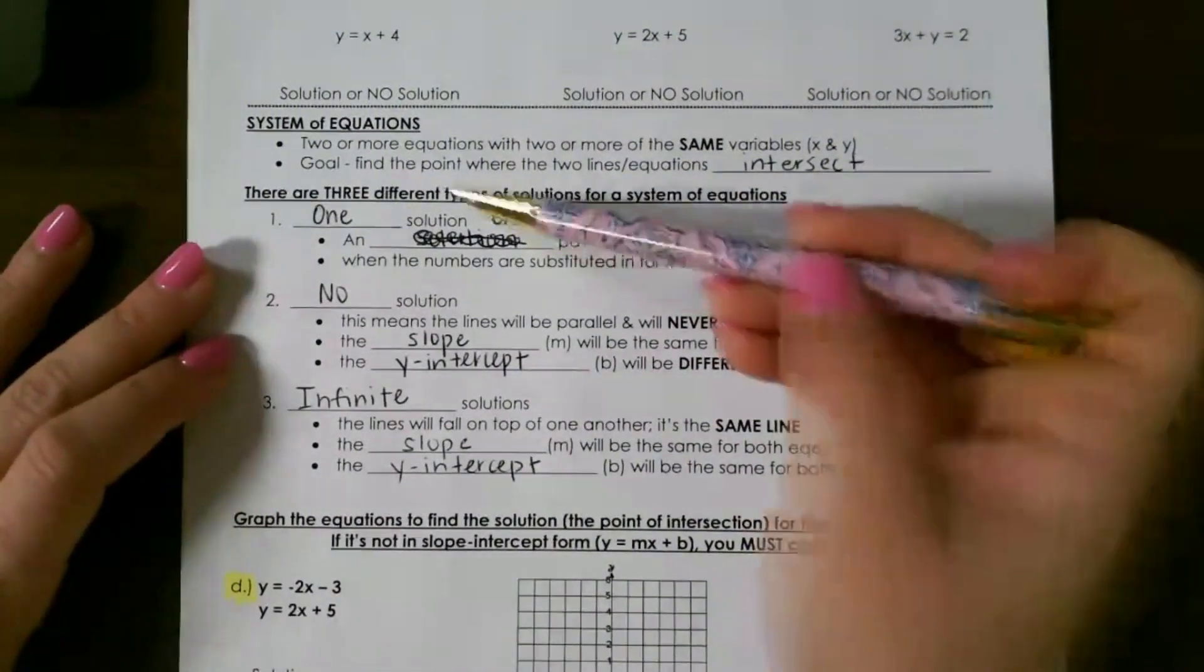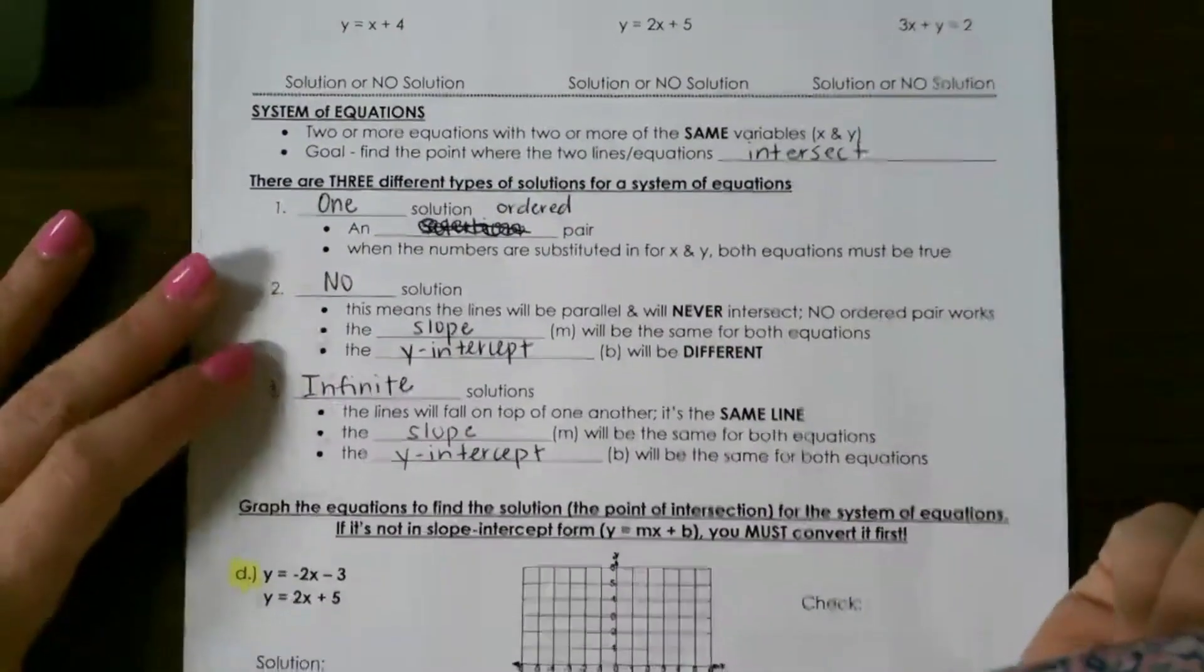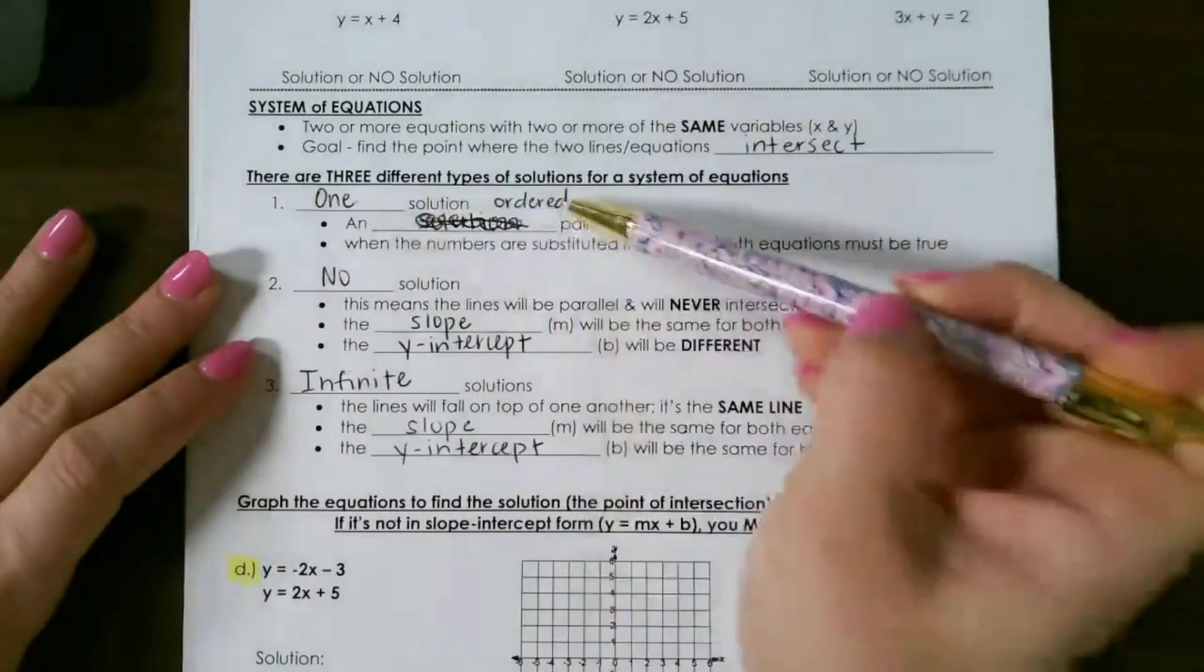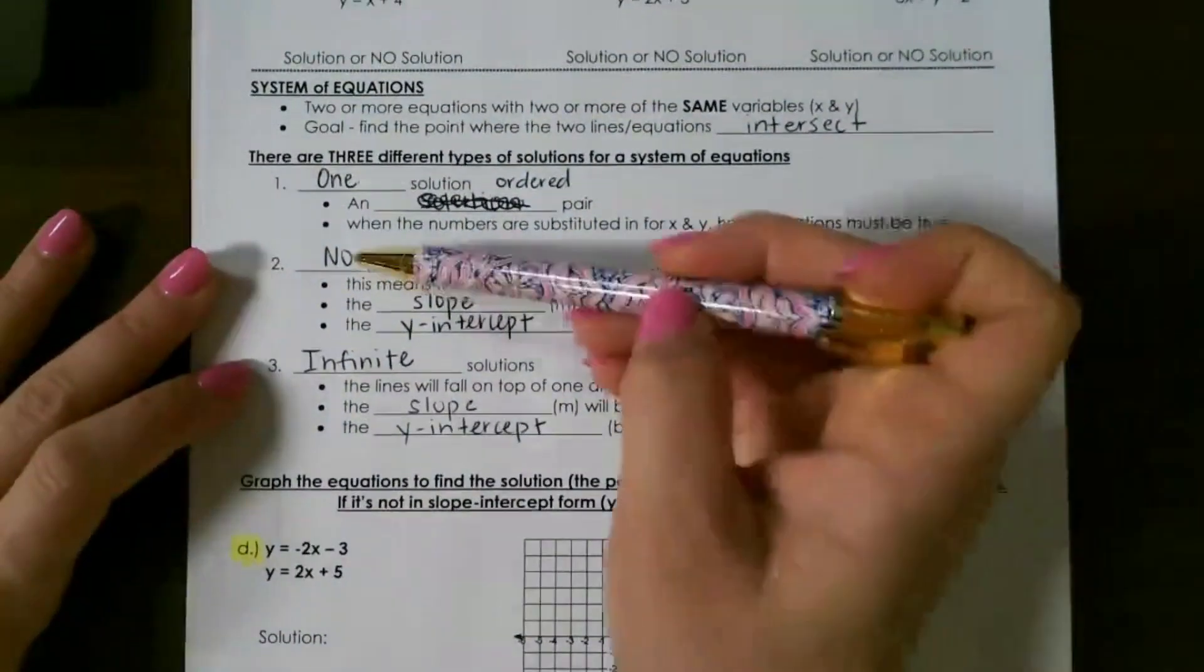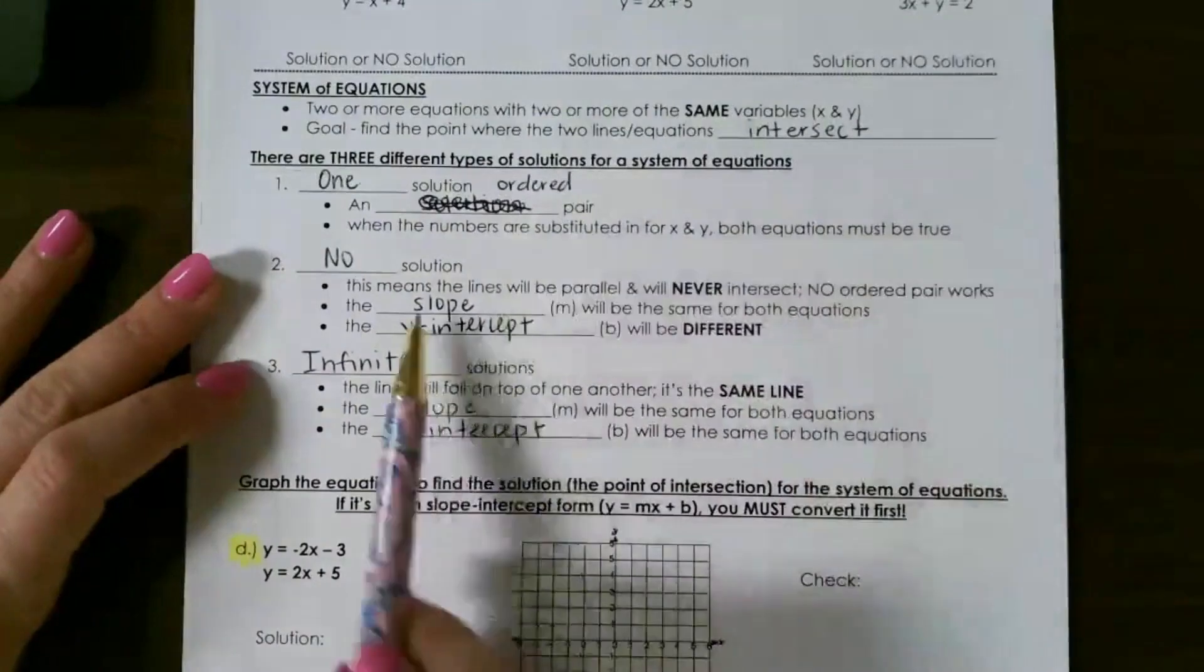We have three different types of solutions for a system of equations. One solution is going to give us an ordered pair, so we would get an ordered pair.